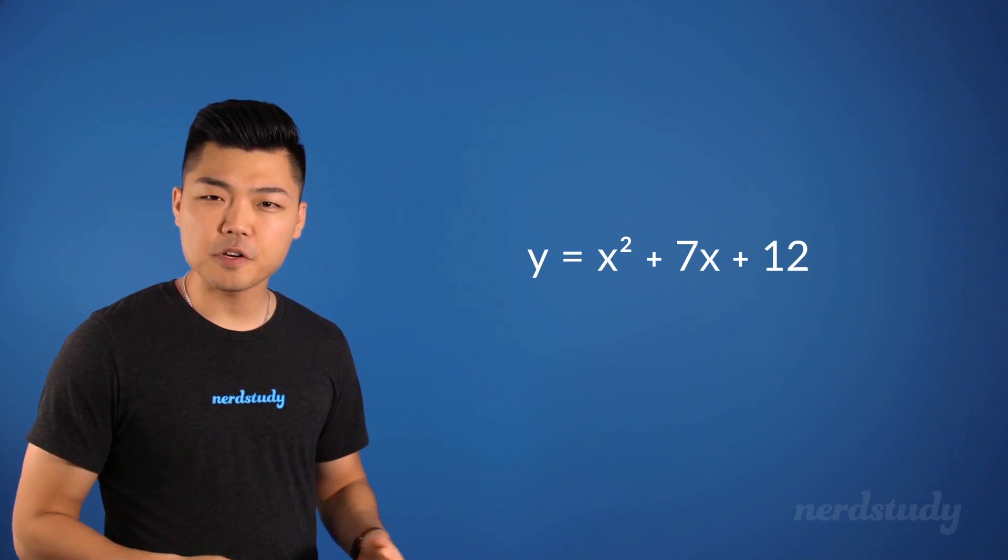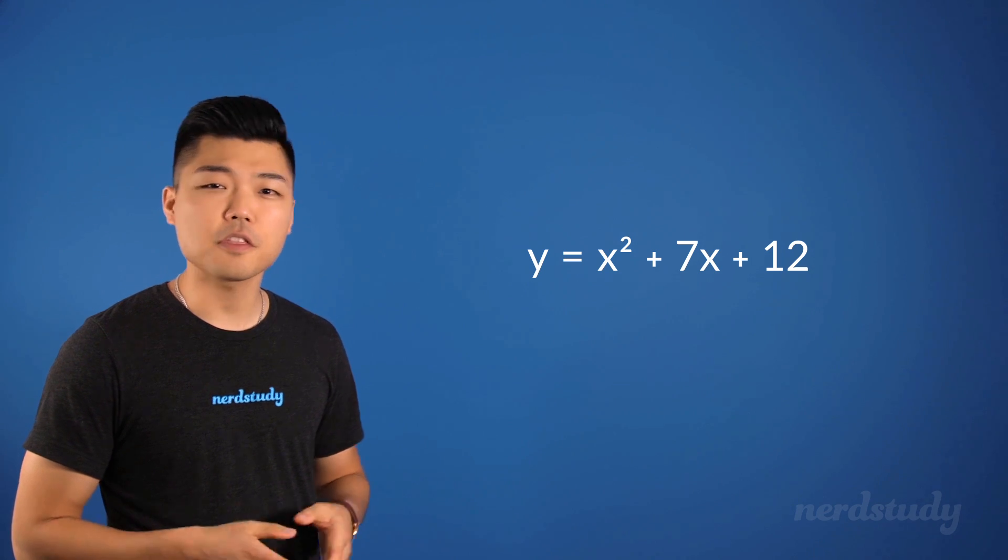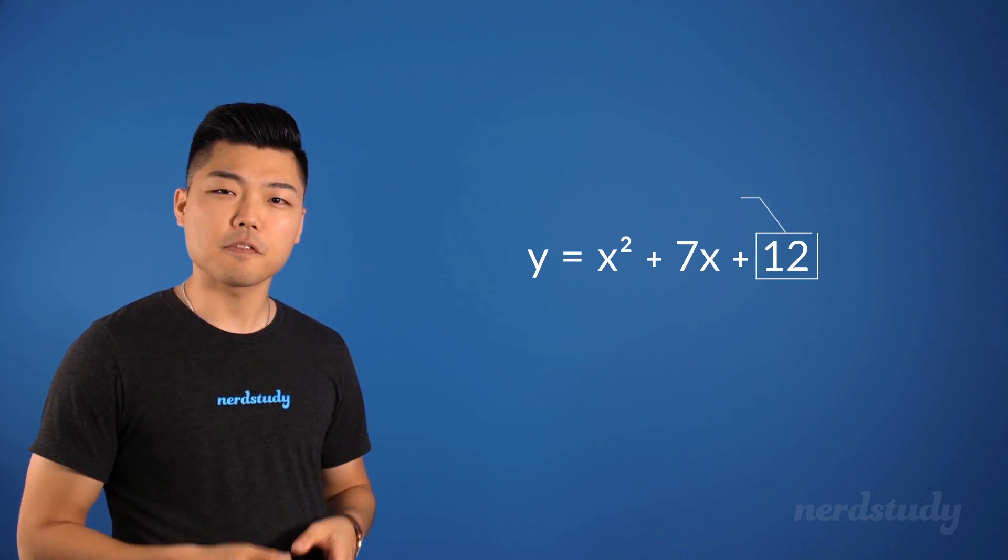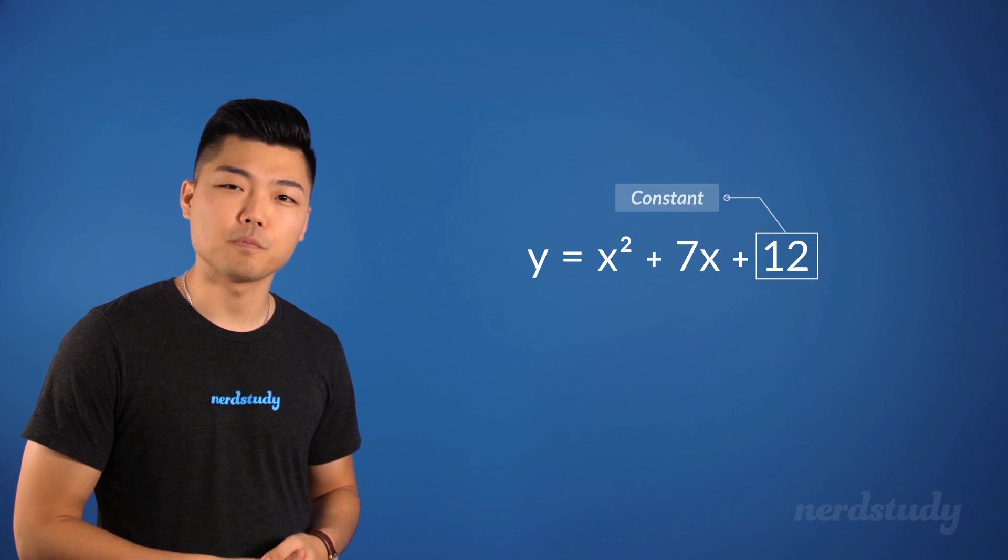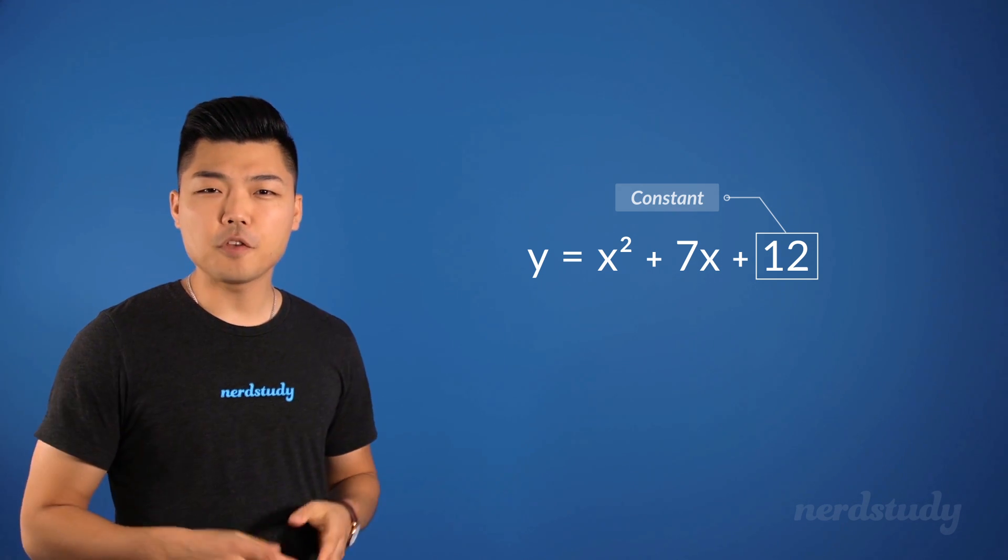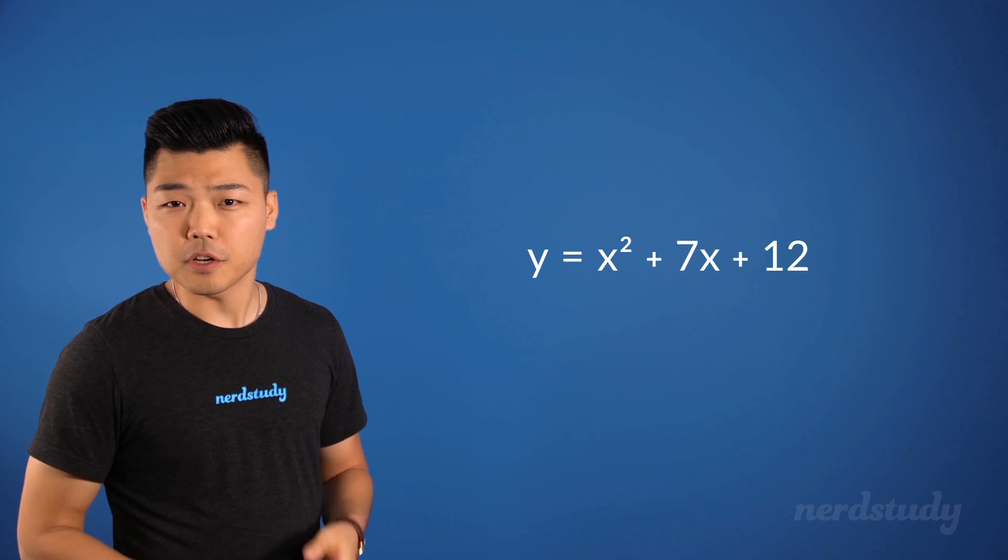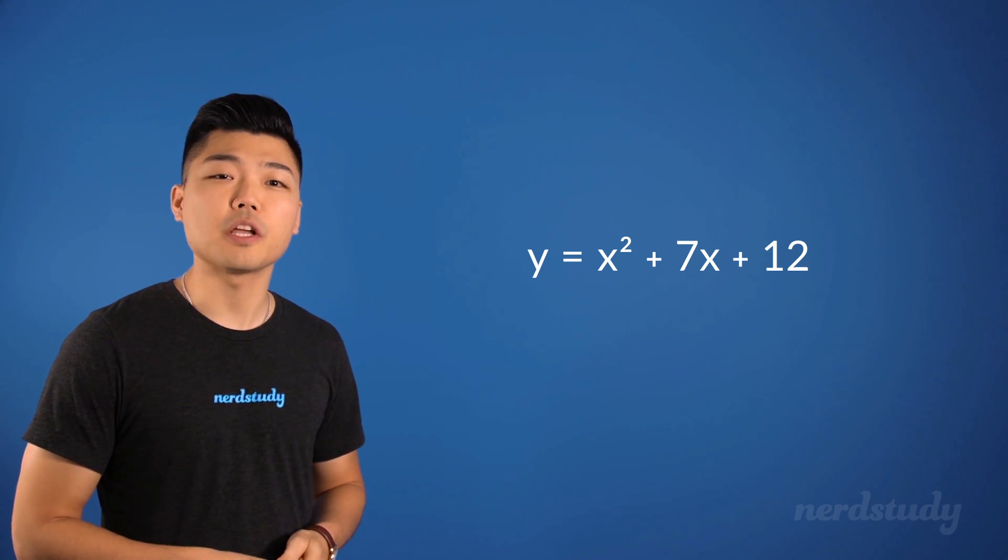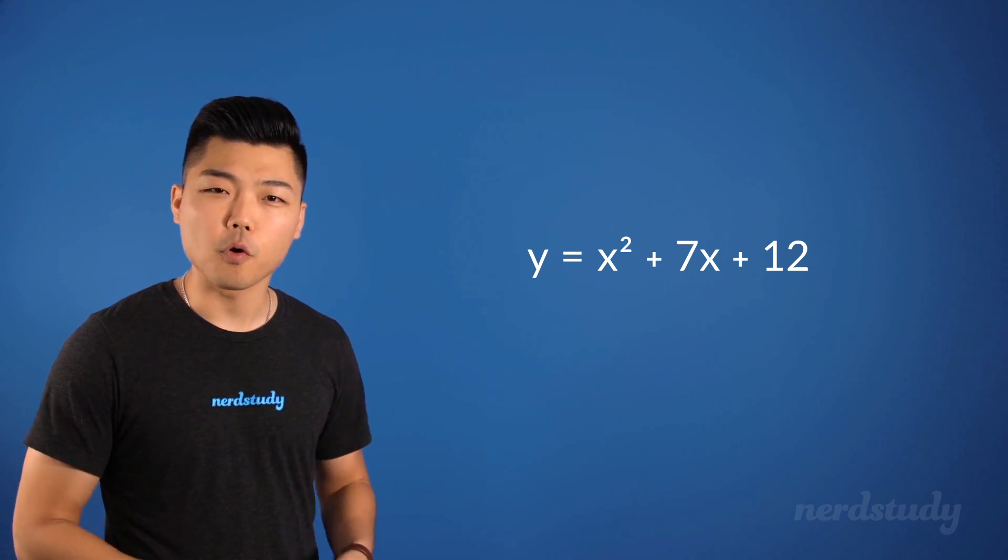So we've got this equation right here. The first step in factoring this is to think of all the factors of the constant in the equation, which in this case is 12. If you don't know how to get factors of a number, then we encourage you to watch our intro to factoring video before continuing.